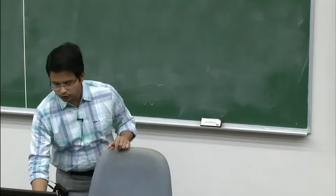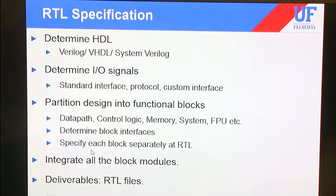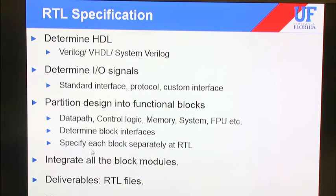Now we will go through each step in this process. First comes RTL specification. At the very start of RTL specification, you need to determine which HDL language you're going to use — you have three options: Verilog, VHDL, or SystemVerilog, depending on your requirements and whether your digital design has any mixed-signal components. At this step you also need to determine your I/O protocol and how you will interface your design with other modules.